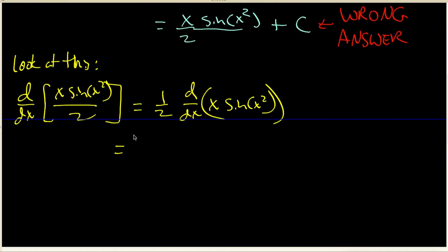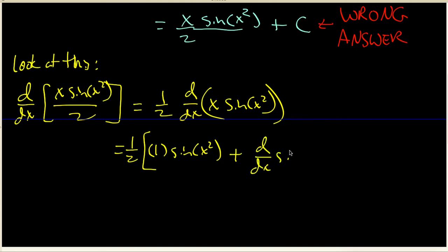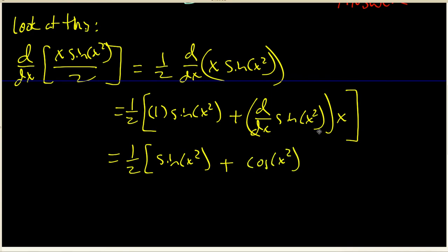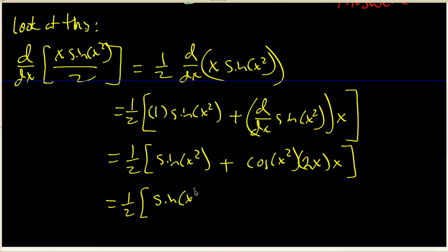Let's apply the product rule. We've got one half times: the derivative of the first part is 1, times the second part, plus the derivative of the second part times the first part. That second derivative involves the chain rule. So we get one half times sine of x squared plus the derivative of sine of x squared, which is cosine of x squared times the derivative of the inside, which is 2x, times that x.